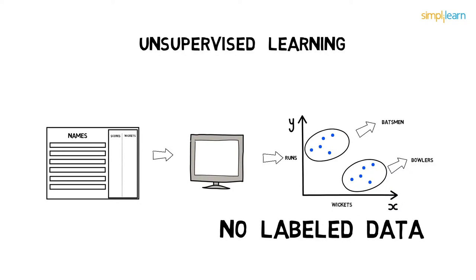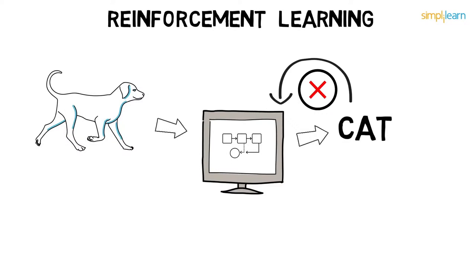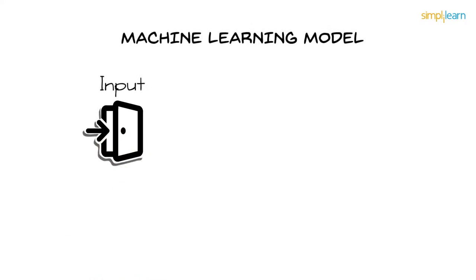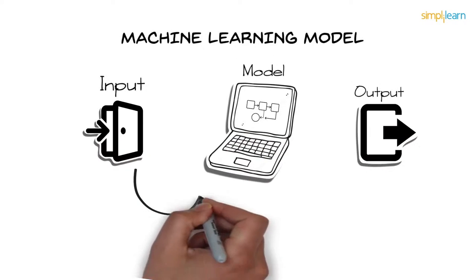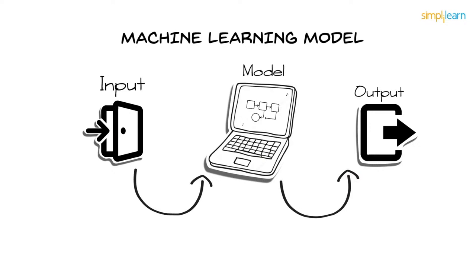Then there is reinforcement learning — reward-based or feedback-based learning. If you provide the system with an image of a dog and it identifies it as a cat, you give negative feedback. The machine learns from the feedback and will correctly classify a dog image the next time. To generalize: input is given to a model, which produces output. If correct, we take it as final; otherwise we provide feedback and retrain until it learns.